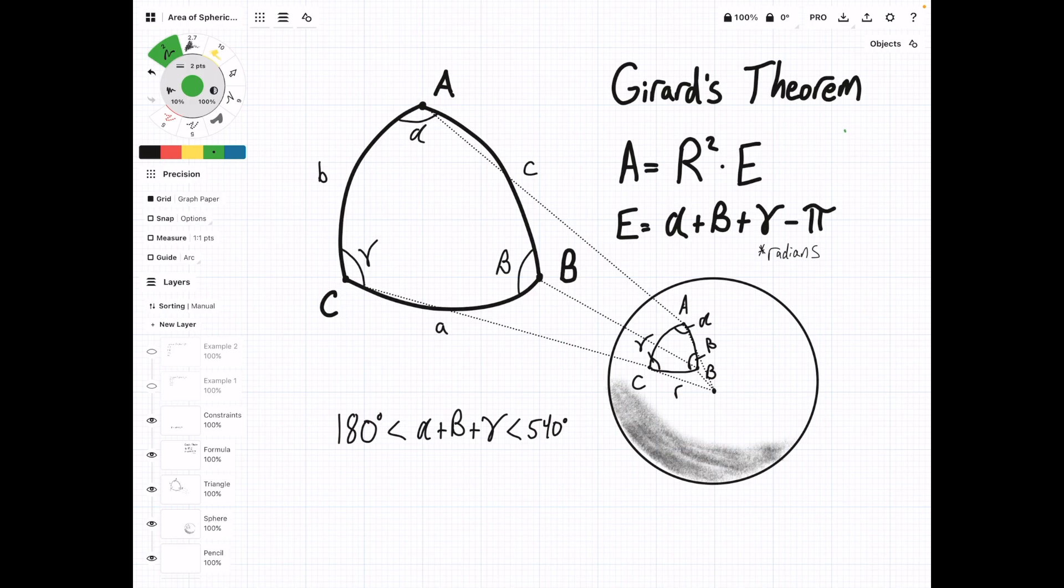In order to use this theorem, we need to figure out what the total sum of the angles are that we're given, and we need to subtract pi from it, and then we can plug that into the area formula. One thing to point out is that this spherical excess is in radians, so if we're given degrees, we're just going to have to convert.